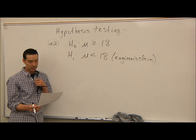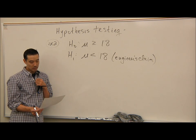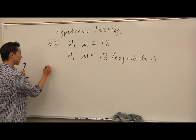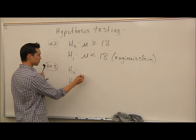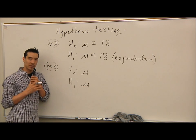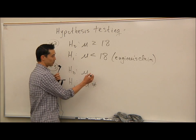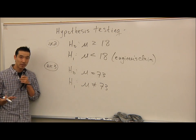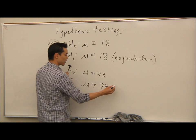Example three: A psychologist feels that playing music during a test will change the results of the test. The psychologist is not sure whether the grades will be higher or lower. In the past, the mean test score was 73. The psychologist's belief is that it's going to be not equal to the current average of 73 — the mean score will change — so H1: mu ≠ 73. That is the psychologist's claim.